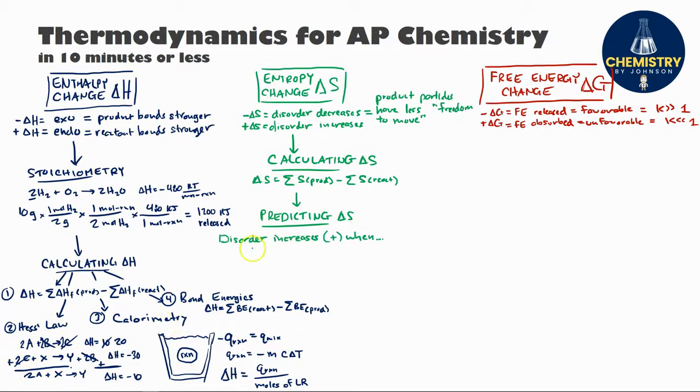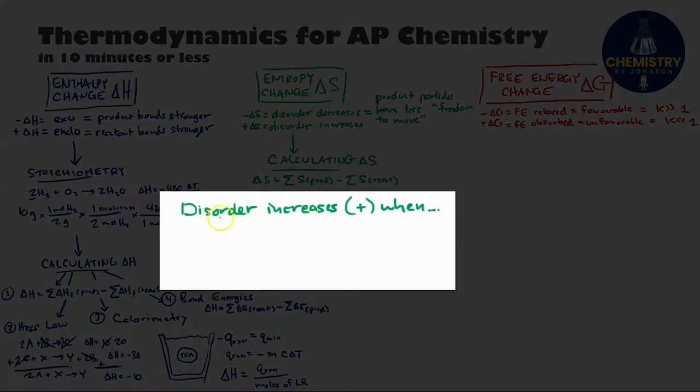So to go over this, let's make a list of times where disorder increases getting a positive delta S value. The reverse of anything listed here, of course, would give a negative delta S. So the first thing you're going to look for with the largest disorder changes are going to be changes in phase, like a solid changing into a liquid or gas or even a liquid that changes into a gas.